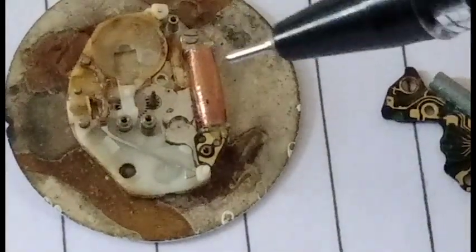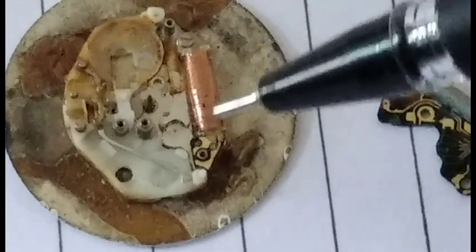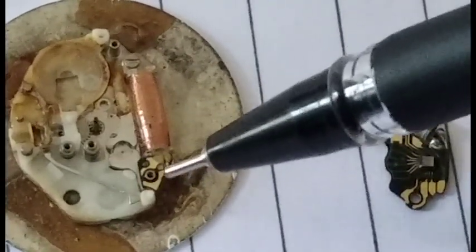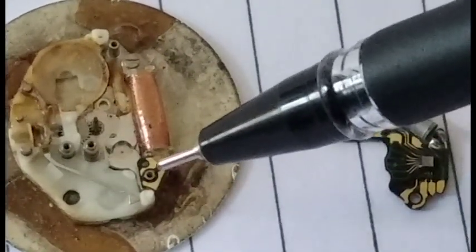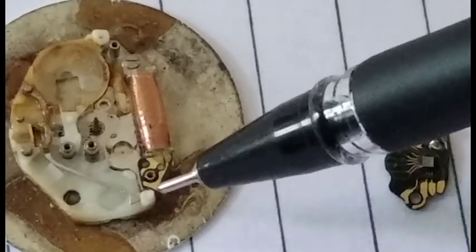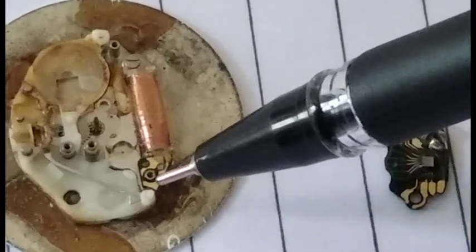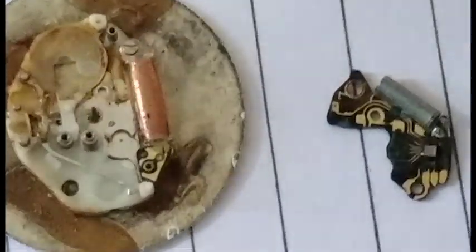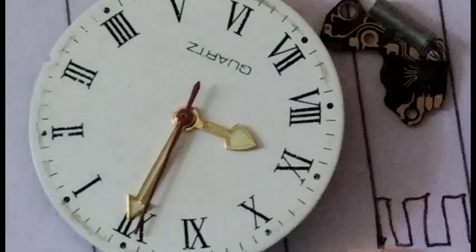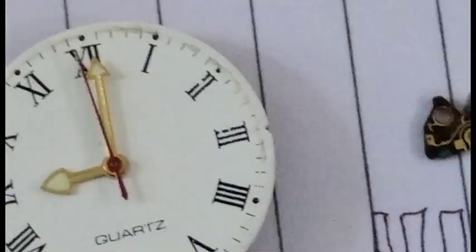This coil converts electrical pulses into magnetic field and that magnetic field magnetizes this plate and there's one gear attached to a magnet. So whenever this plate gets magnetized the gear lifts up and it moves the gears inside this machine which indirectly drives the clock. So in this way this clock works.